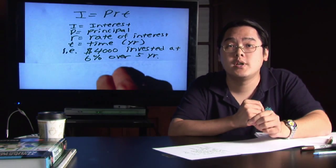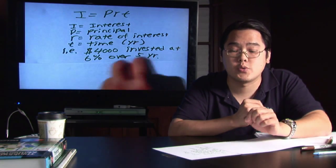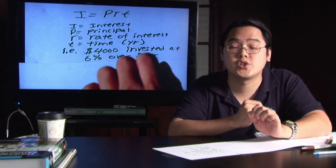So convert, take that decimal point and shift it to the left two places. So 6% is really .06.